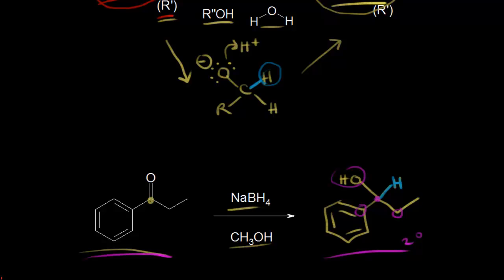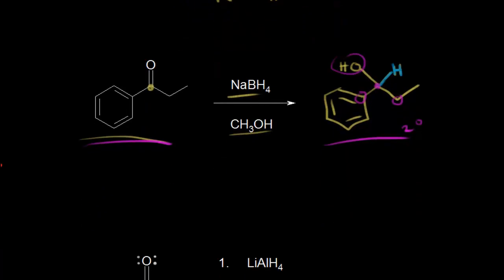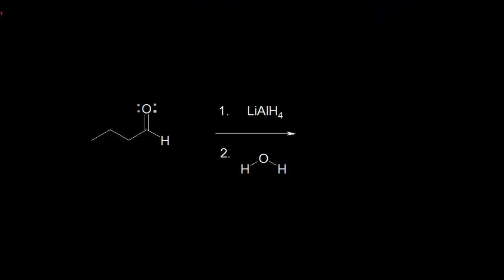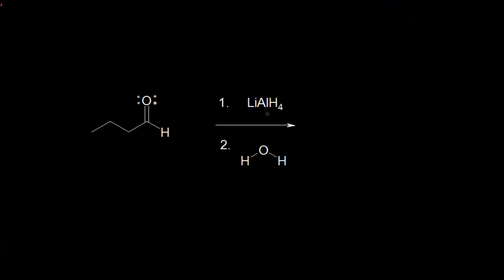Another hydride reducing agent is lithium aluminum hydride. Let's draw out the structure for this one: aluminum with four bonds to hydrogen, which would give aluminum a negative one formal charge, and the lithium plus one ion would be there as well. Once again, this is a hydride transfer agent — we're going to think about transferring a hydride from lithium aluminum hydride to the carbonyl.